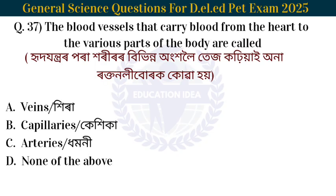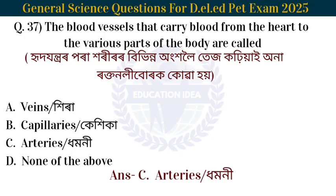Next question: The blood vessels that carry blood from the heart to the various parts of the body are called? The blood vessels that carry blood from the heart to various parts of the body are called arteries.